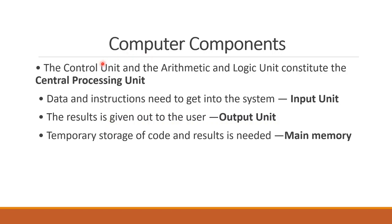The Control Unit and the Arithmetic Logic Unit constitute the Central Processing Unit. So when we say CPU, we have three things: first, the Control Unit; second, the Arithmetic and Logic Unit; and we also have high-speed memory registers.